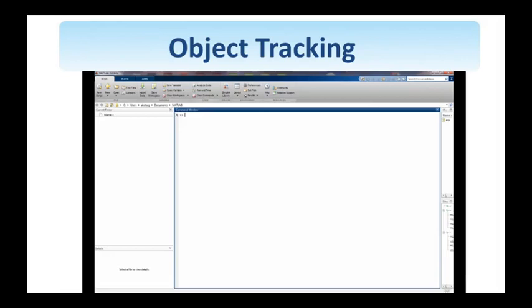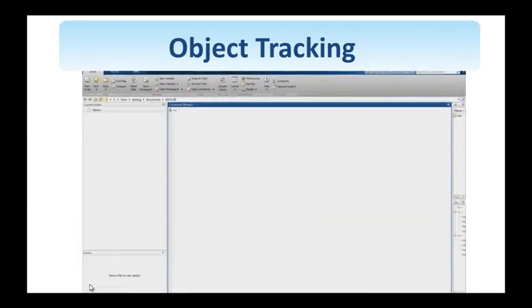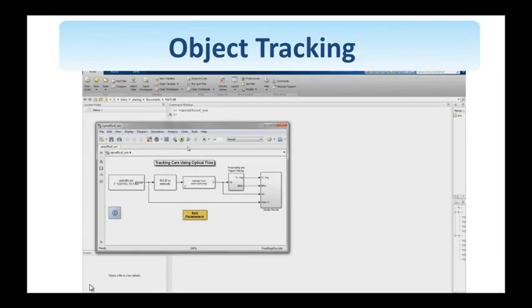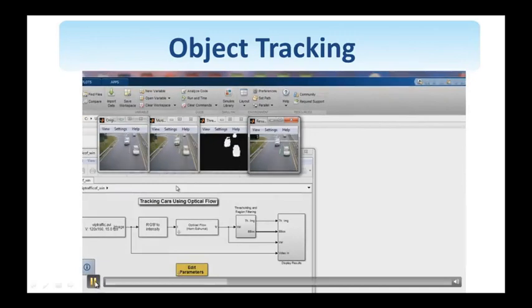Object tracking is a very challenging problem with considerable research and development in academia and industry alike. We use here a MATLAB program to demonstrate the basic idea. The name of the program is typed in this command window, VIPTrafficOF_WIN. And this window pops up. If we press play, then we see these four individual windows showing up.